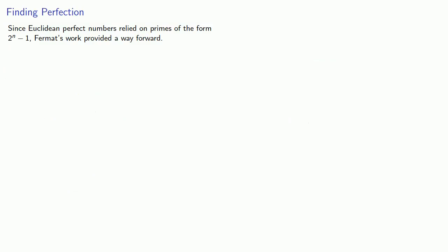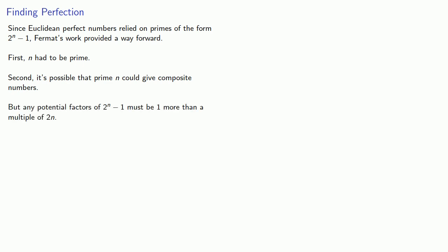Since Euclidean perfect numbers relied on primes of the form 2^n - 1, Fermat's work provided a way forward. First, n had to be prime. Second, it's possible that prime n could give composite numbers, but any potential factor of 2^n - 1 must be one more than a multiple of 2n, and this allows us to quickly determine whether 2^n - 1 is prime.